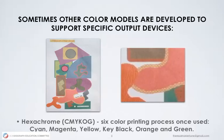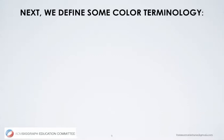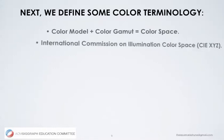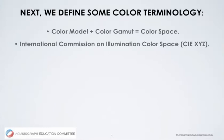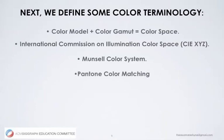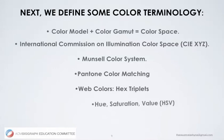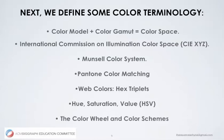Here we show an example of a CMYK OG process printed — a visualization done in the 1980s on the LISA computer, which was a precursor to the Apple Macintosh. Next we define some color terminology: color model and color gamut equals color space; the International Commission on Illumination Color Space CIEXYZ; the Munsell color system; Pantone color matching; web colors and hex triplets; hue, saturation, and value developed in the computer graphics community; and the color wheel and color schemes.